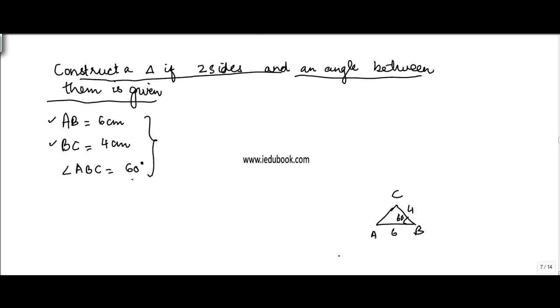So how do I kind of construct this? I guess it's fairly easy. Let's see it in a structured manner. The first thing I do is I know side AB, so I will draw AB equals to 6 cm.